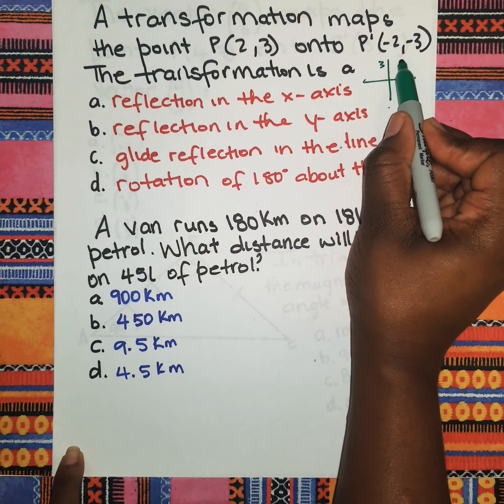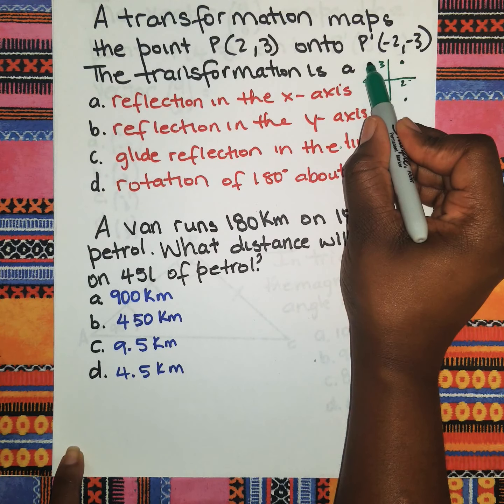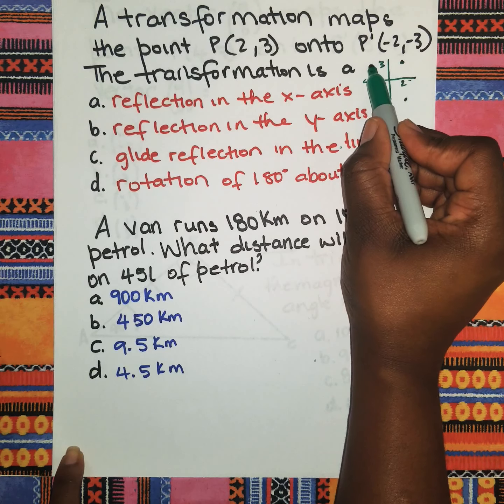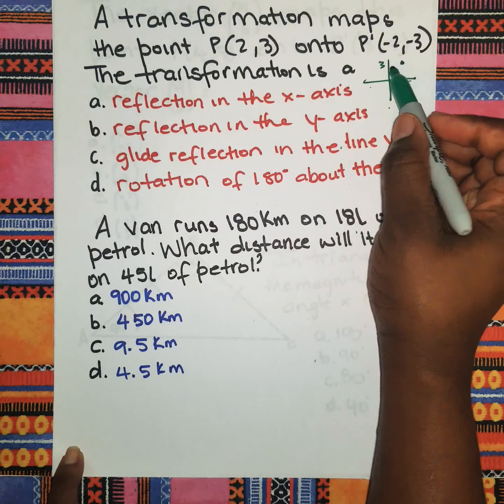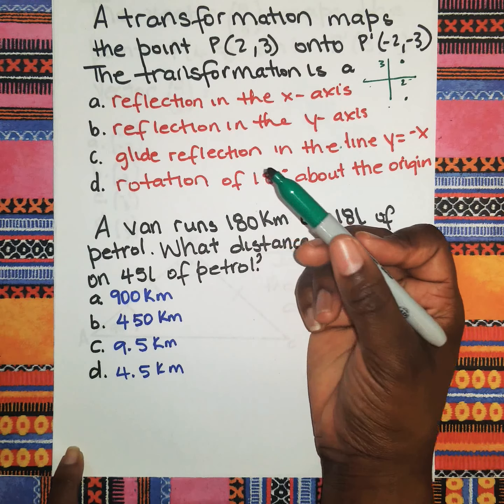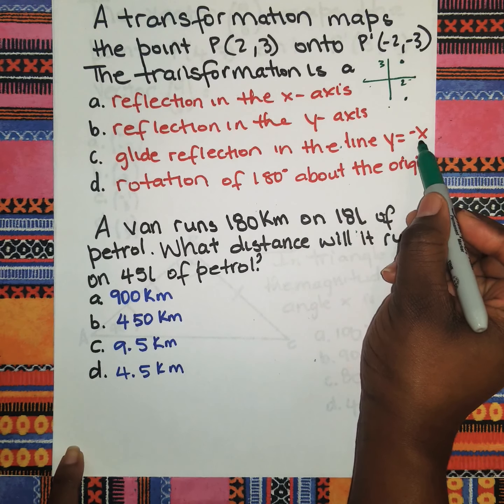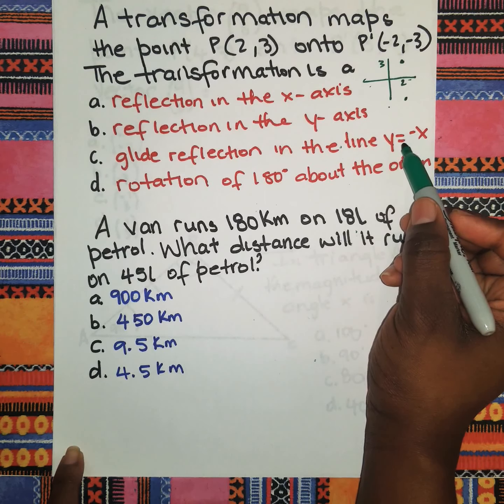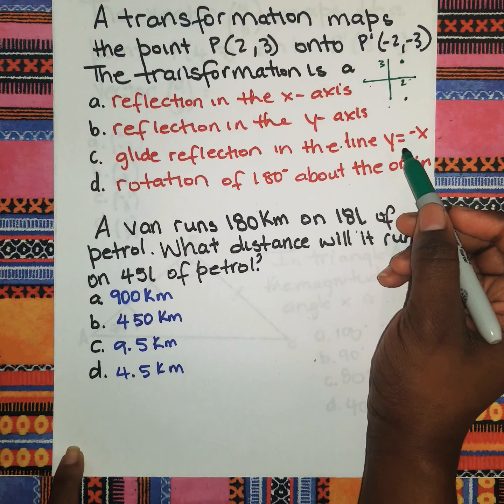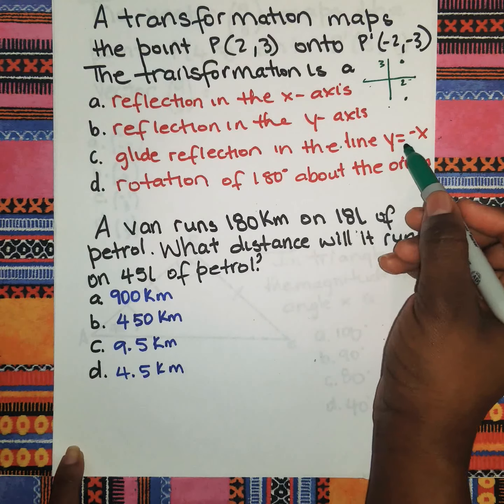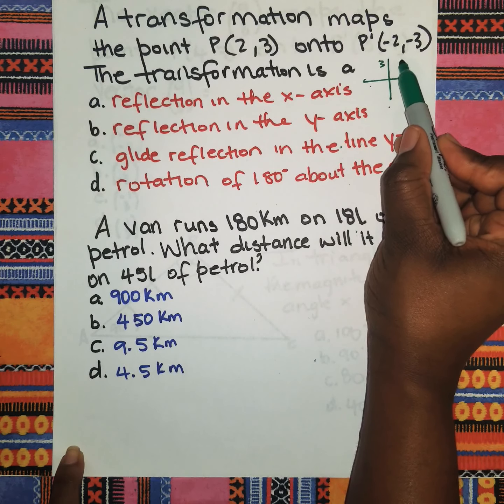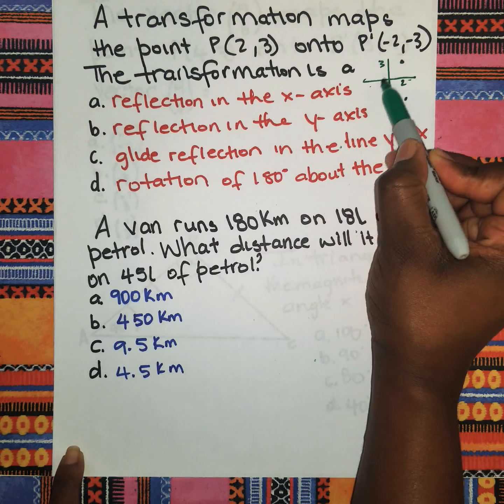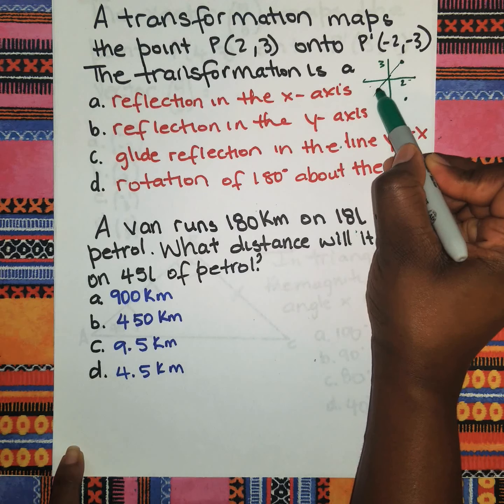In the y-axis, if you should reflect this, the 2 will be negative but the 3 will be positive, so we know that is not the answer. This is a glide reflection in the line y = x? No, it is not a glide reflection because glide reflection is basically a reflection plus translation and that's not it.